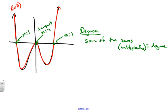By counting up our multiplicities: one plus two plus one gives us four, so this is a fourth degree polynomial. It has all the characteristics of a fourth degree polynomial's end behaviors.